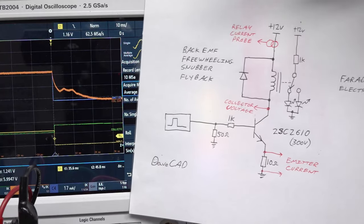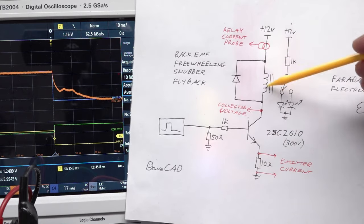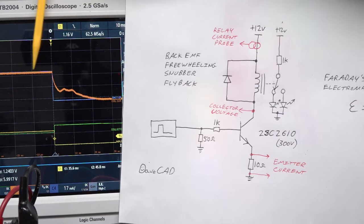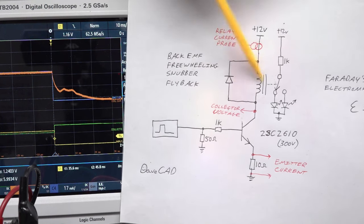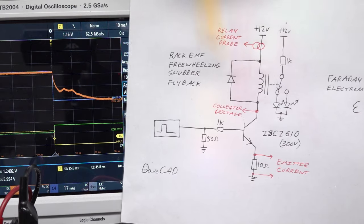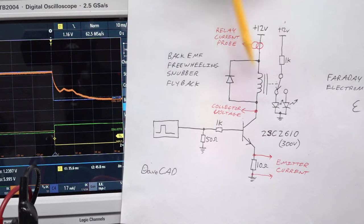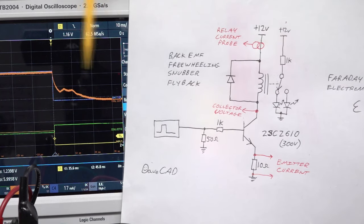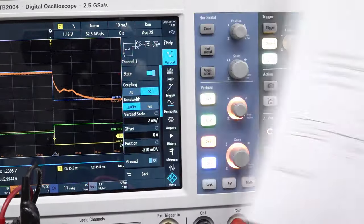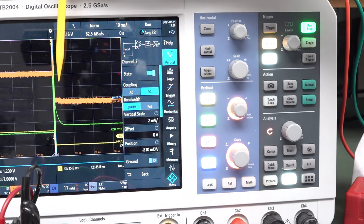Here's the interesting part of why I included this current probe. Normally the emitter current matches the inductor current, but with the back EMF diode installed, look at the timescale — 10 milliseconds per division. The orange relay current takes 20-odd milliseconds to decay, because the energy stored keeps the voltage up and the current circulating in the diode loop for much longer. The blue emitter current has dropped to zero, but the relay current is still circulating for that huge delay.